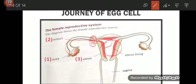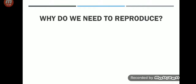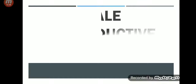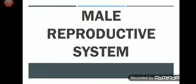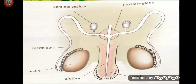Now a quick revision of the whole topic. We started the human reproductive system. First: why do we need to reproduce? To ensure the survival of species and humans. First we studied the male reproductive system — a simple picture showing the prostate gland, seminal vesicles, sperm duct, testis, urethra, and penis.